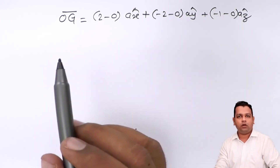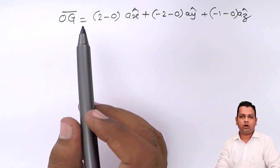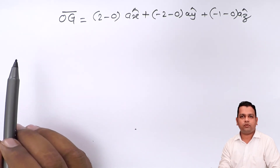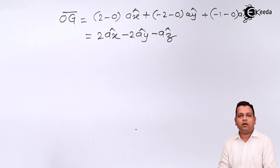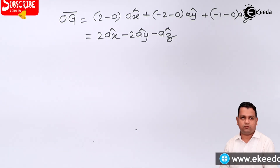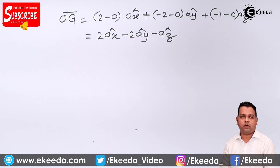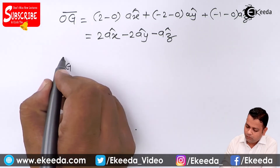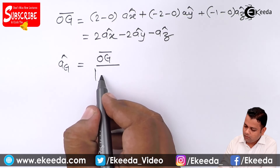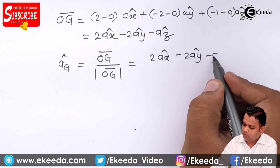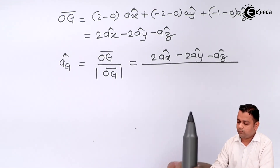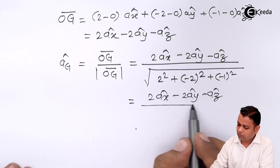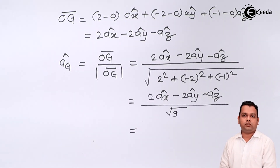When finding a vector, we always subtract the coordinates of the starting point from the coordinates of the ending point of the vector. The unit vector is given by the vector divided by its magnitude. So for the given vector, the unit vector will have the magnitude of OG bar in the denominator. So the final answer will be obtained.